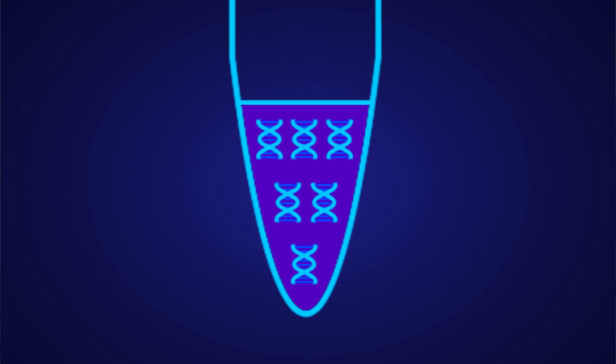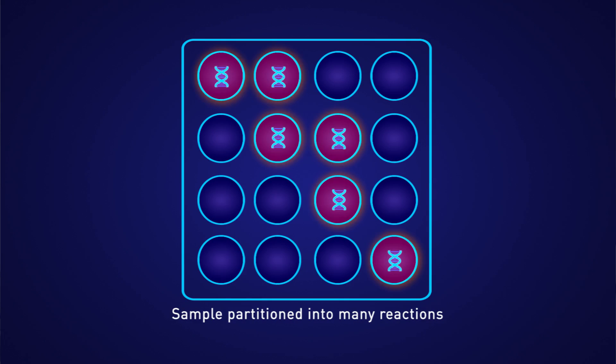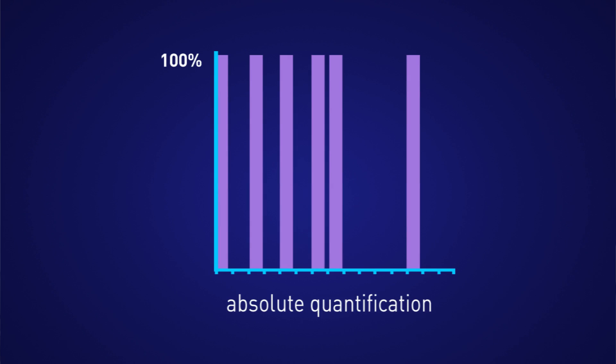So now we have determined the absolute quantities of our unknown samples. Making all of those standards was a bit of work. Is there any other way to get this type of data without the need for standards? Yes! There is one other way to get absolute quantities with TaqMan assays and that is to use digital PCR. Digital PCR works by partitioning a dilute, approximately single-copy sample into many individual real-time PCR reactions. Some portion of these reactions will contain the target molecule and are positive wells, while others do not and are negative wells. Following PCR analysis, the fraction of negative answers is used to generate an absolute answer for the exact number of target molecules in the sample, without reference to standards or endogenous controls.